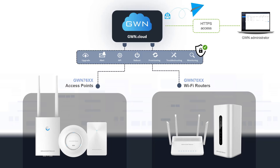GWN.cloud offers high scalability with support for an unlimited number of GWN devices. It provides a simple, secure, and integrated way to automatically provision GWN devices — simply unbox them, power them on, and plug them into a network with internet access, and GWN.cloud will provision the configuration preset of the device automatically. For that, you need to have the device added to your GWN.cloud account and have a configuration preset assigned to it.